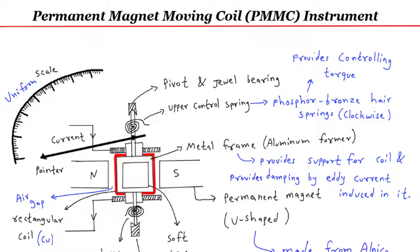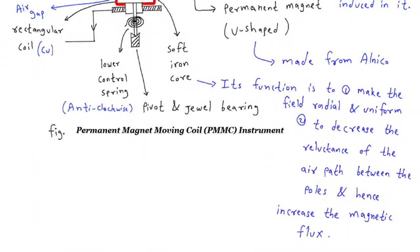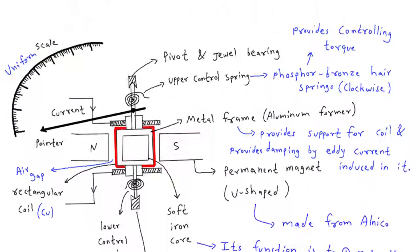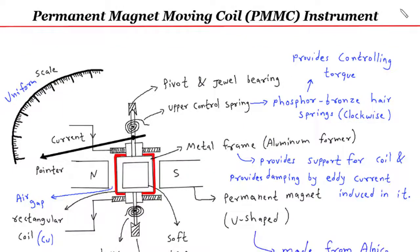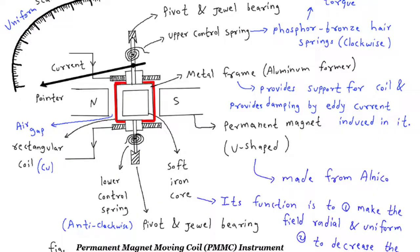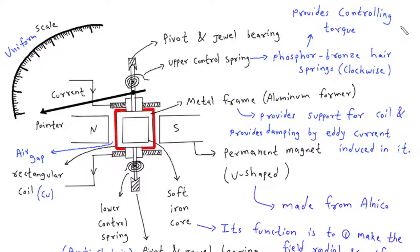The PMMC meter is an indispensable tool in electrical engineering, allowing us to measure current with precision and reliability. Its design, from the pivot and jewel bearings to the rectangular coil and magnetic forces, showcases the synergy between mechanical and electromagnetic principles.